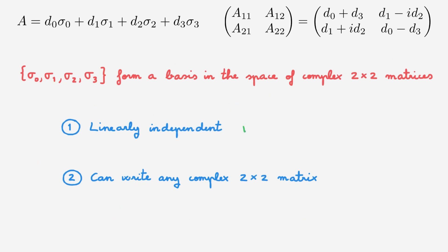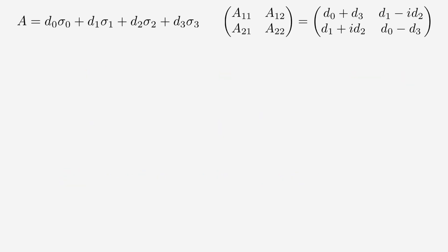We've now proved the first condition — that these four matrices form a basis for the space of complex 2x2 matrices. So let's now consider the second condition. We need to show that any matrix A can be written as a linear combination of the identity matrix and the three Pauli matrices. We need to show that for any possible values of the A matrix elements, we can find four expansion coefficients d.